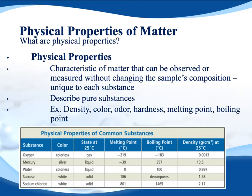The second part of this section deals with the difference between physical and chemical properties. Physical properties are a characteristic of matter that can be observed or measured without changing the sample's composition, and they are unique to each substance. So we're not changing what it's made out of — it's still the same thing. We can only use this to describe pure substances, because otherwise we could be changing its composition.